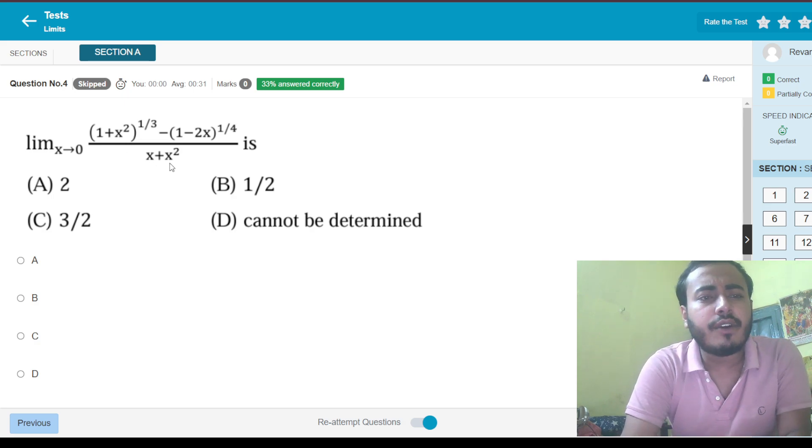Let's go to the next question. A very standard type of question that can be done easily using L'Hospital. If you apply L'Hospital once, you will get 1 by 3 into 2x into this 1 plus x squared thing. And again if you apply L'Hospital, you will get plus 1 by 4 into 2 into 1 minus 2x to the power something, and in the denominator you'll get 1 plus 2x. Putting x equals to 0, the 1 plus x squared term and the 1 minus 2x term will become 1. What's left will be 1 by 3 into 2x, which is again 0. But this 1 by 4 into 2, which is half, will remain as it is. And alongside that, 1 plus 2x will also remain there. So B would be the answer.